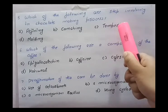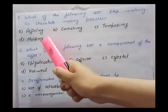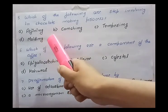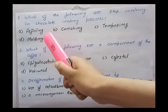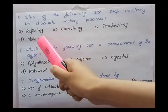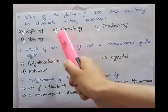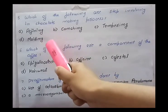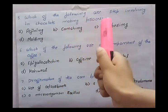Fourth option is molding — molding is also done during the chocolate manufacturing process. So all of the options are correct: A, B, C, and D. All four terms are used during the chocolate making process.